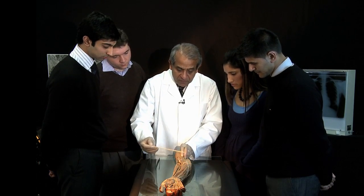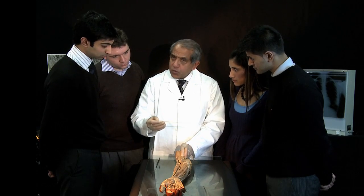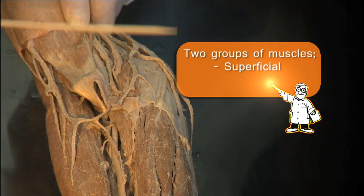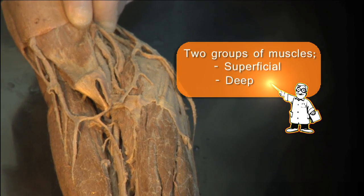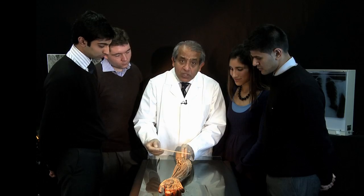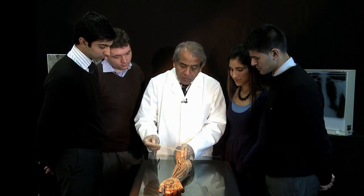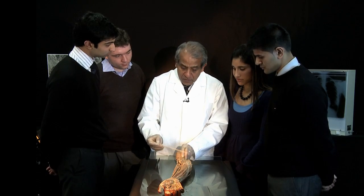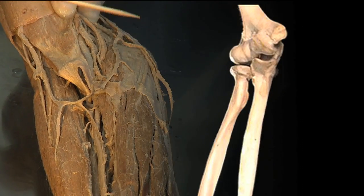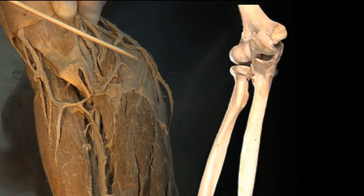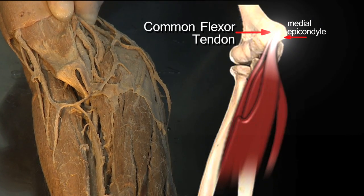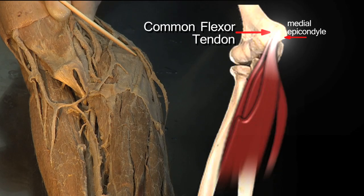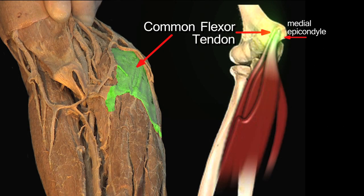The flexor compartment of the forearm comprises two groups of muscles: a superficial bunch of muscles and a deep layer of muscles. The superficial muscles all have one thing in common, which is that they arise at least in part from the common flexor tendon, which arises from the front of the medial epicondyle of the humerus. And there is the common flexor tendon.